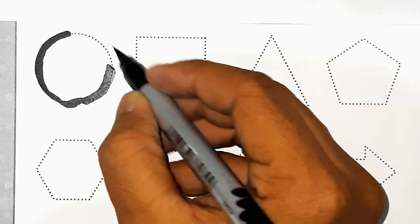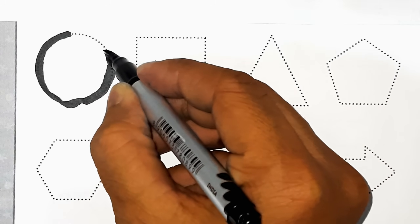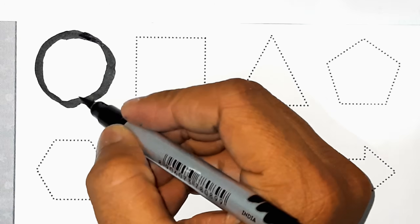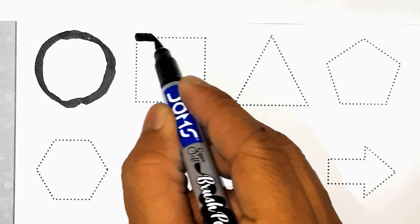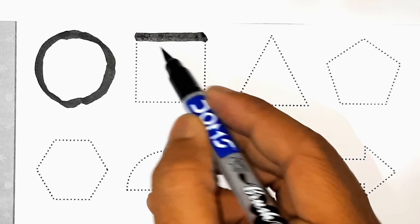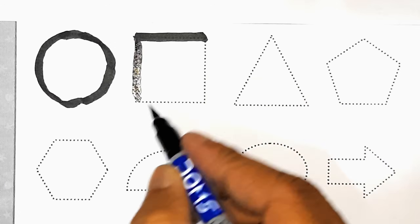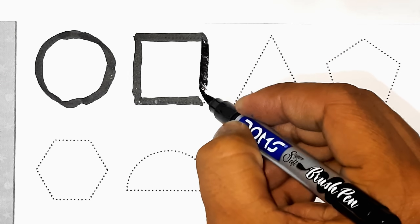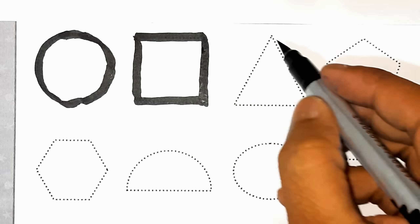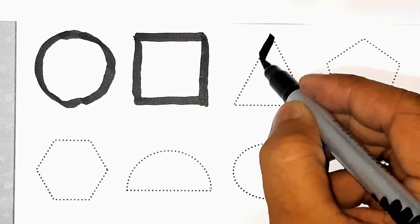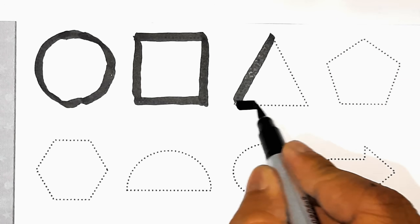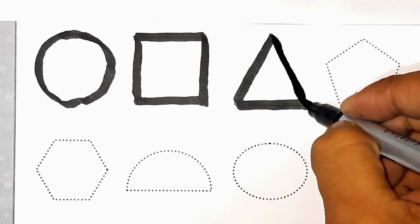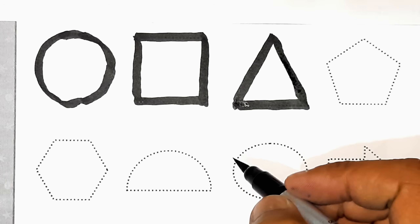यह है circle. यह है square. यह है triangle. (This is circle. This is square. This is triangle.)